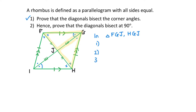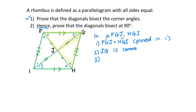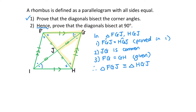Since the question says 'hence', I can use what was proved before. Angle FGJ equals angle HGJ — proved in question 1. Next, JG is common. Finally, FG equals GH — given. Therefore, triangle FGJ is congruent to triangle HGJ, and the reason is side, angle, side.